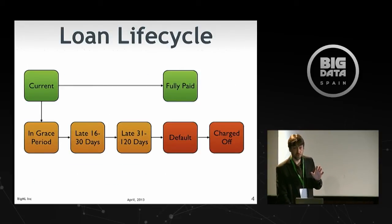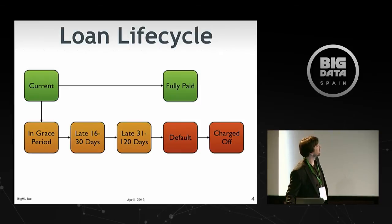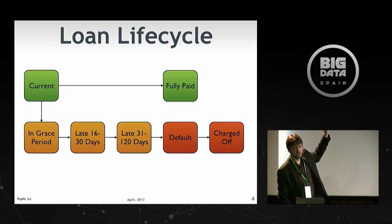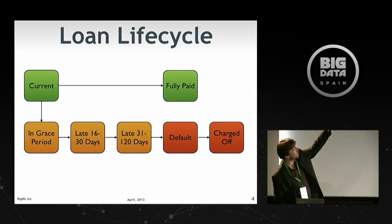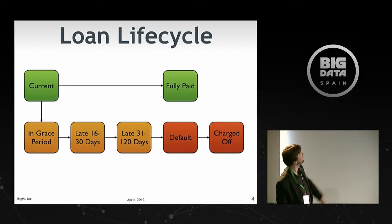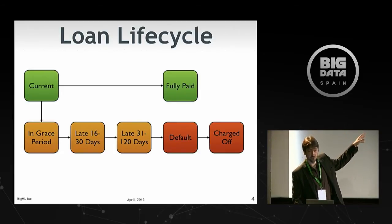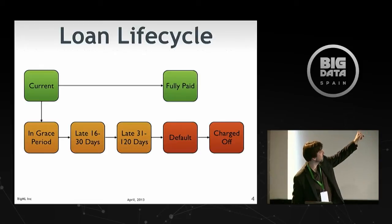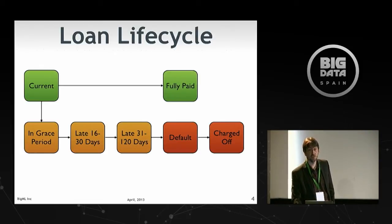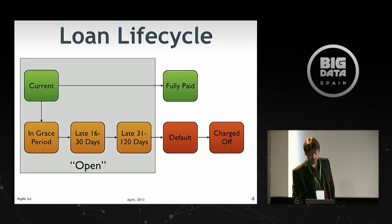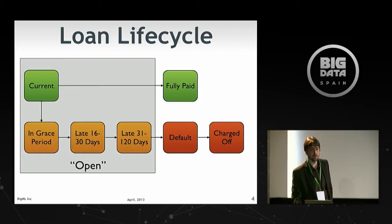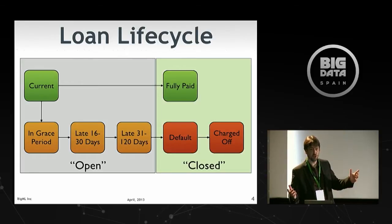Here's the loan life cycle. Loans start when they get funded — when the first payment comes in, it's current. If you're always paying, it stays current and eventually becomes fully paid. If you're late, it goes into a grace period, keeps escalating, eventually goes into default, and at some point gets charged off. The important distinction is that the stuff on the left — current, late, in grace — those are open loans. They don't have a final state yet. The stuff on the right — fully paid, default, charged off — those are closed, and we can use those to create a predictive model.